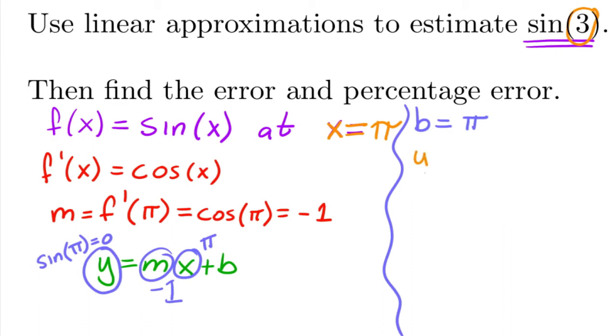So our tangent line is going to be y is equal to negative one x plus π. Okay, so this is the linearization of sine of x at x equals π. So that's great.